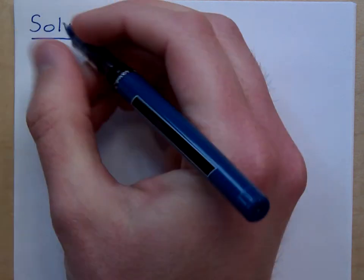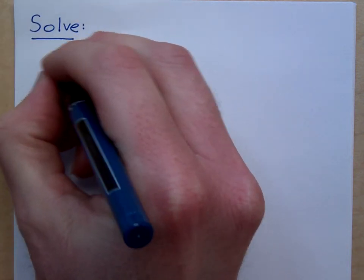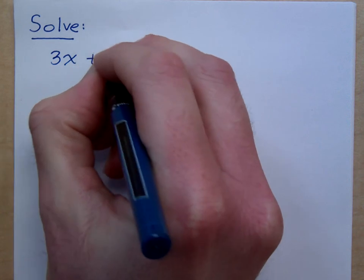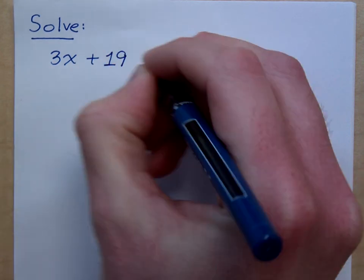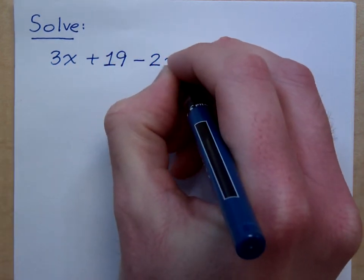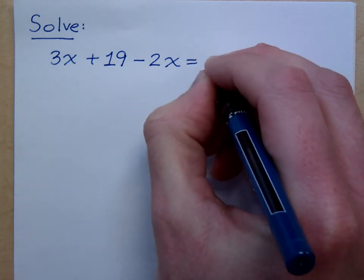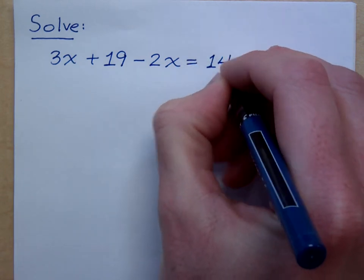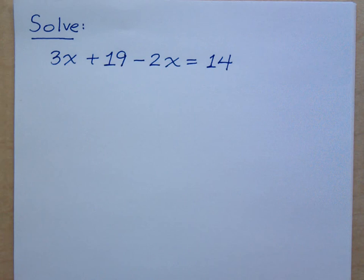Let's get back to solving equations. We were using the addition property of equality. We're going to continue using that. Then we're going to add another property of equality here in just a moment. So let's take this equation. 3x plus 19 minus 2x equals 14.